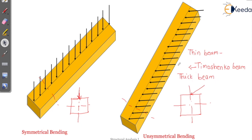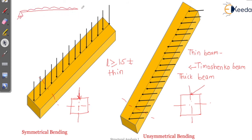What do we mean by thin and thick beam? A thin beam is one whose length is greater than or equal to 15 times its thickness. In thin beams, deformation due to shear is almost negligible — we do not consider it. For beams we have studied, like a simply supported beam with some load over a very long span, the contribution of shear to deformation is negligible. But when the beam is thick, shear deformation is considered.